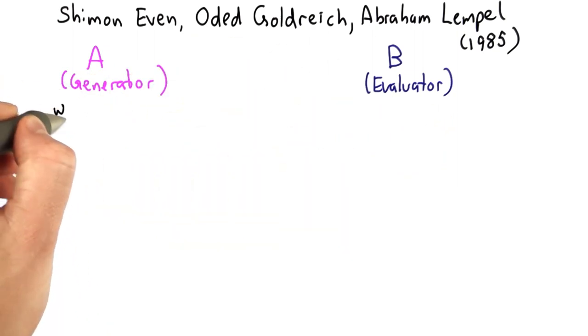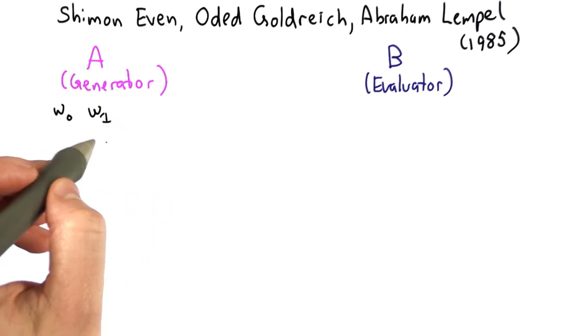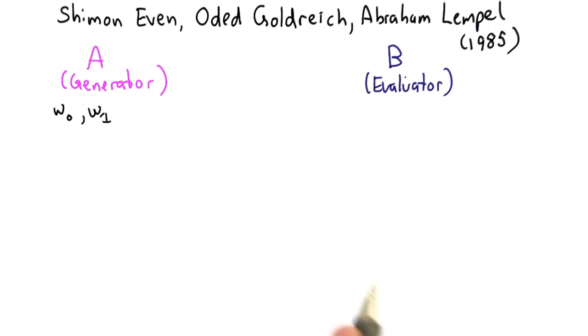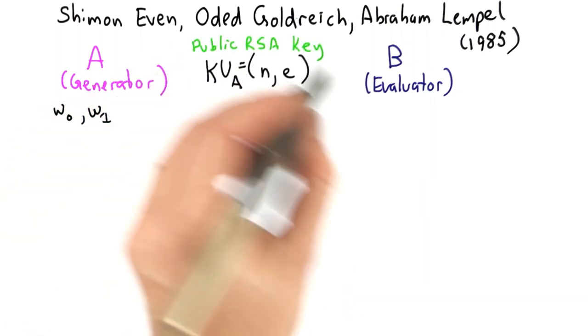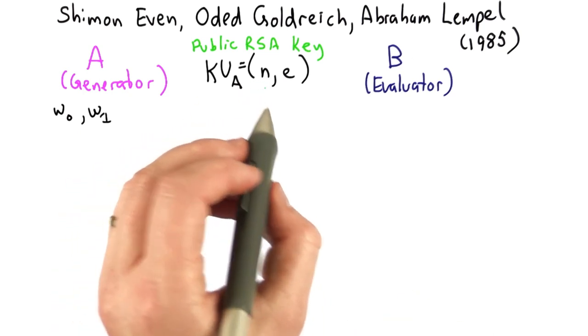So our goal is that Alice has two wire labels. These correspond to the inputs to some gate, and she wants to transfer one of them to Bob without revealing the other one. We're going to use Alice's public key. We'll assume that's known to Bob before the protocol starts.